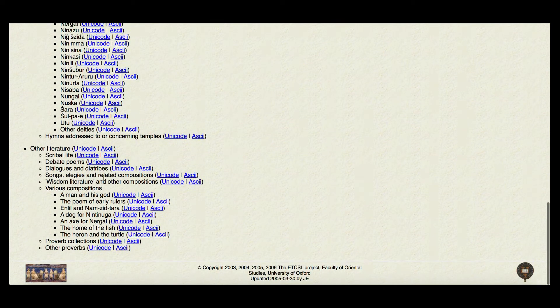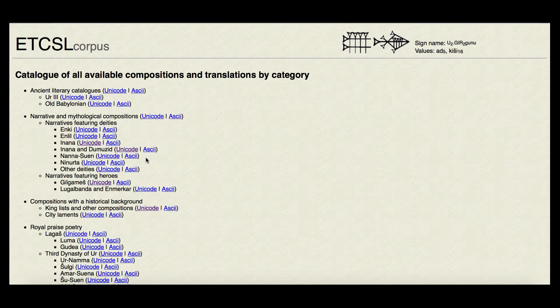Royal praise poetry — if you want to look at praises to different rulers, you can see down here. First dynasty of Babylon — these are Sumerian royal praises to Hammurabi. Literary letters and letter prayers. Hymns and cult songs — these are hymns to various deities. And then this sort of miscellaneous category: literature about scribal life, debate poems, and wisdom literature. That's sort of how it generally breaks down.